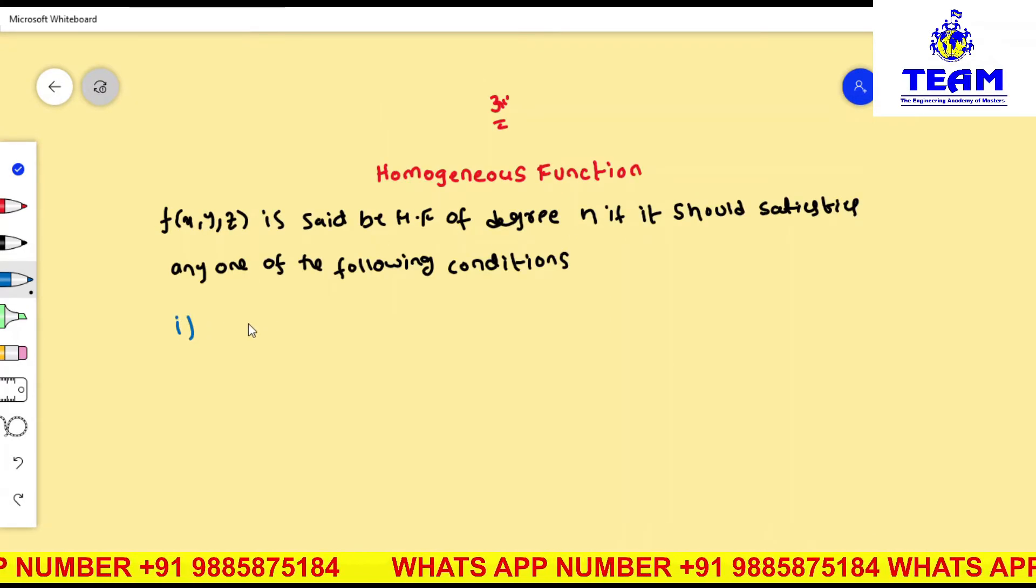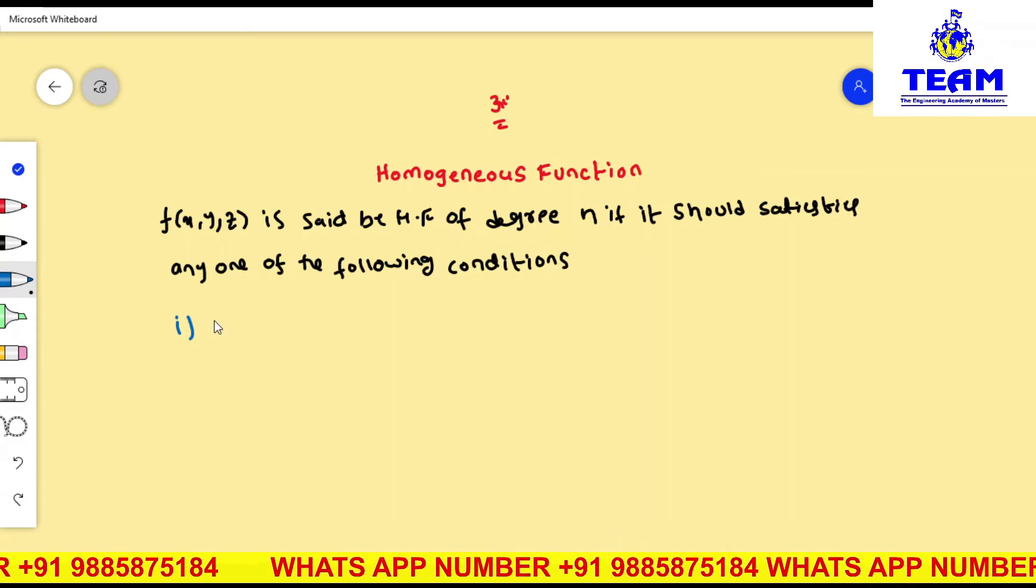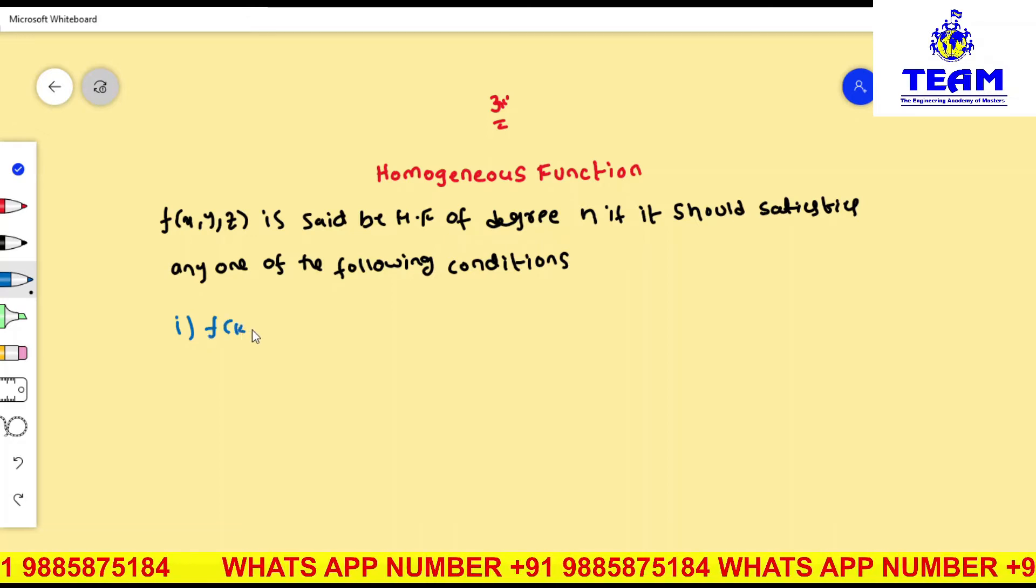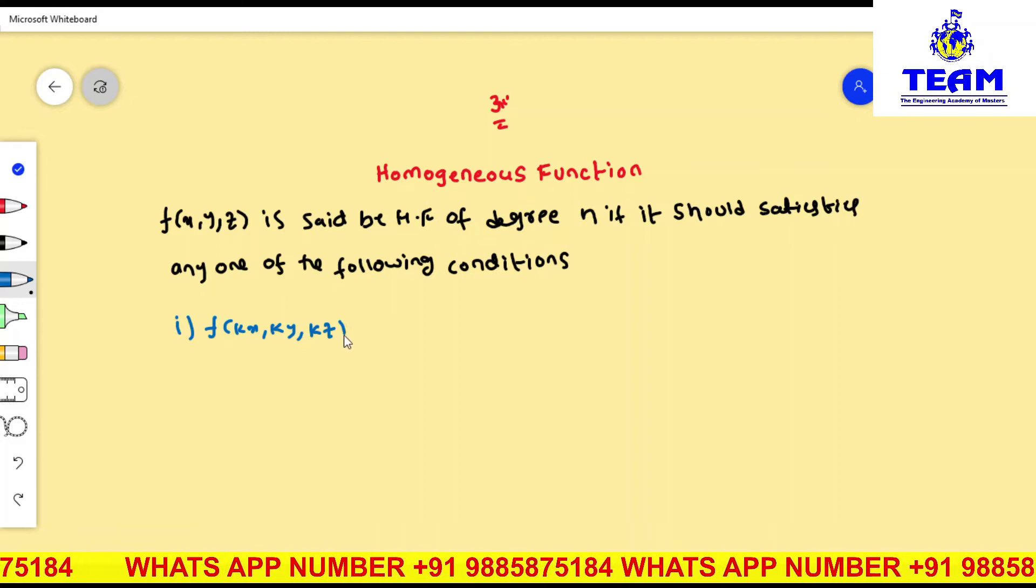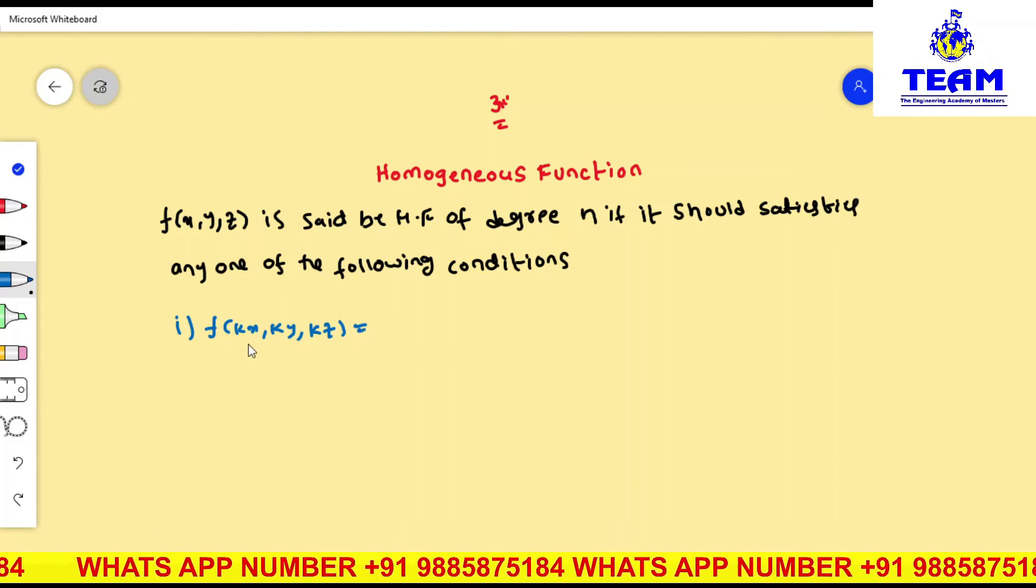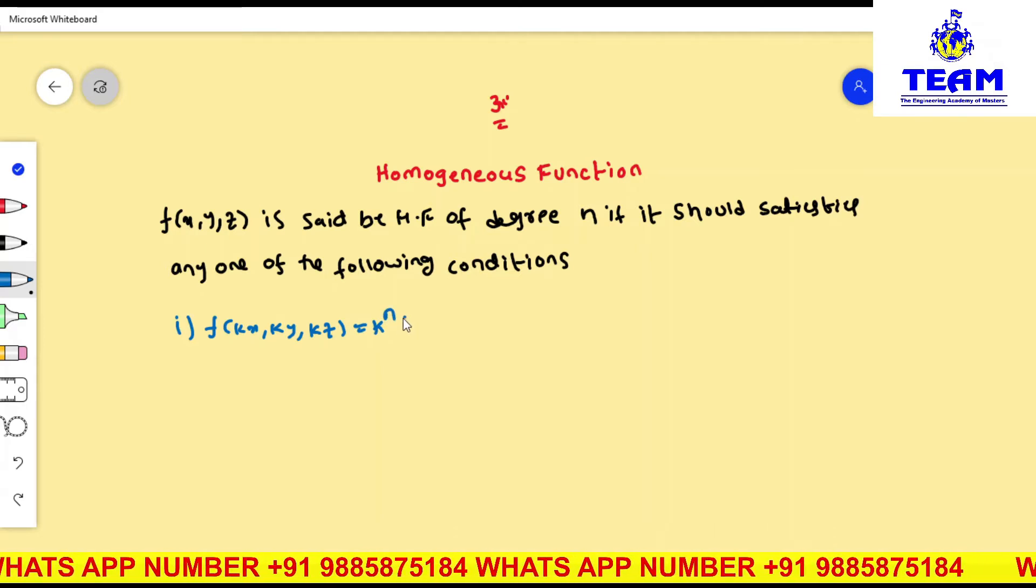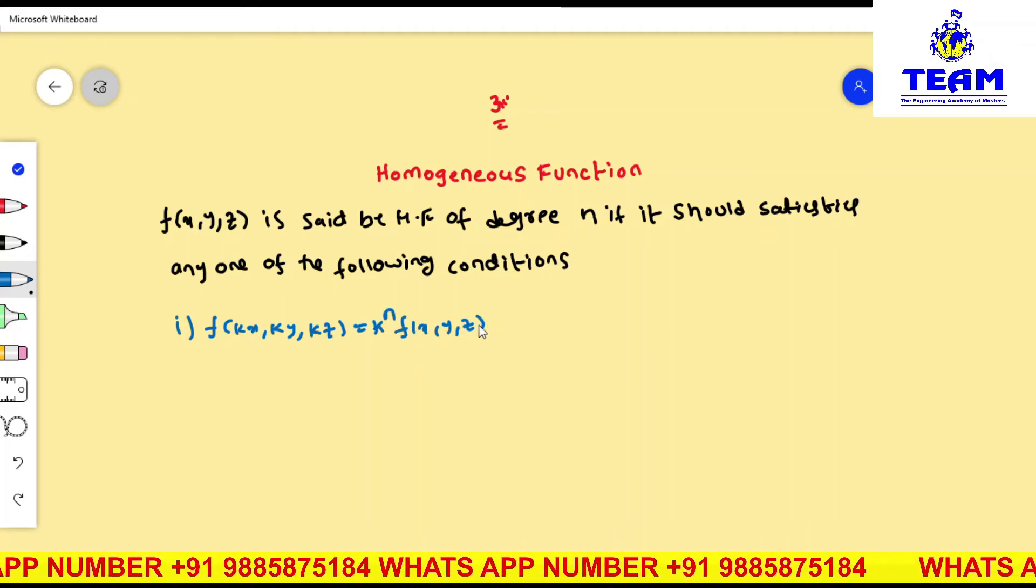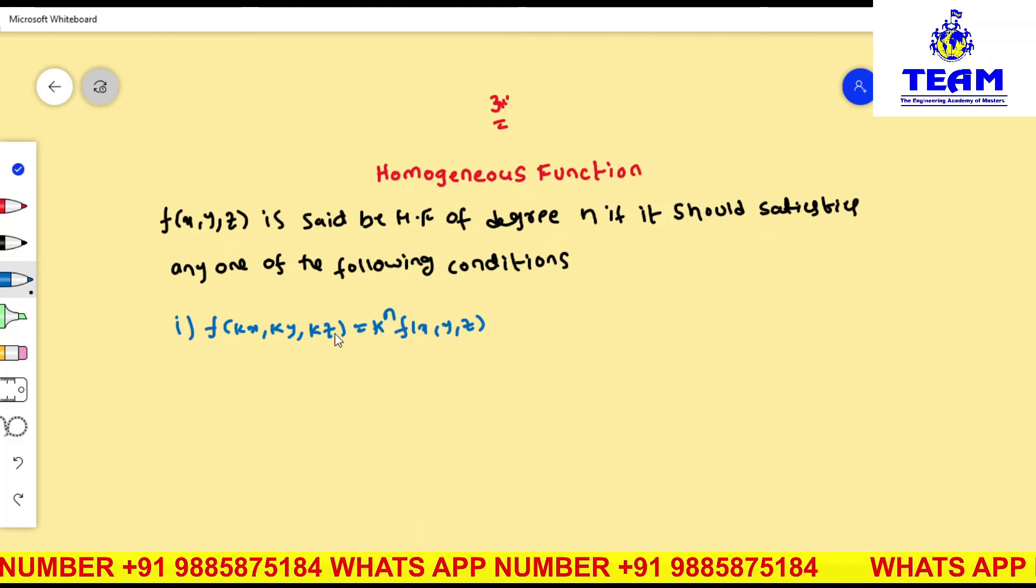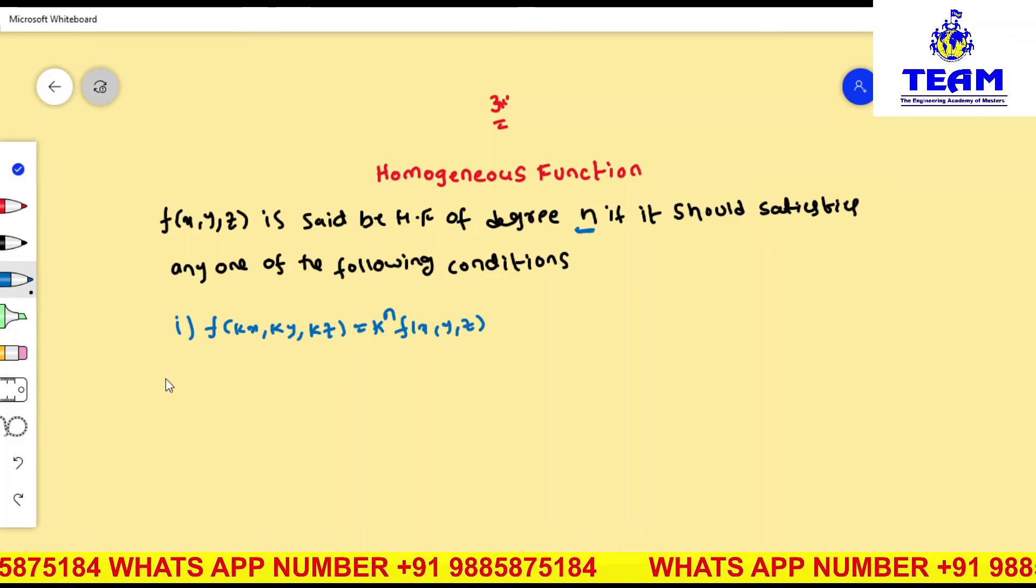First one: like for two variables, same thing we are doing. In place of x we are writing kx, in place of y, ky, and in place of z, kz we are substituting. Then we have to get f(kx, ky, kz) equals k to the power of n times f(x, y, z). Then you can say the given function f(x, y, z) is a homogeneous function of degree n.